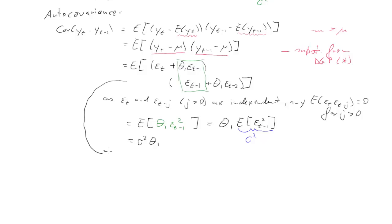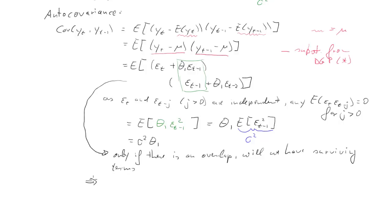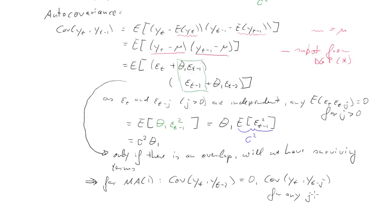From this two-line approach, we see that non-zero terms survive only if there is an overlap between the two lines. For an MA1, the covariance between Y_t and Y_{t-2} would be zero, because the second line shifts one step further with no overlap. More generally, the covariance between Y_t and Y_{t-j} for any j greater than 1 is zero, where that 1 corresponds to the order of the MA1 process.